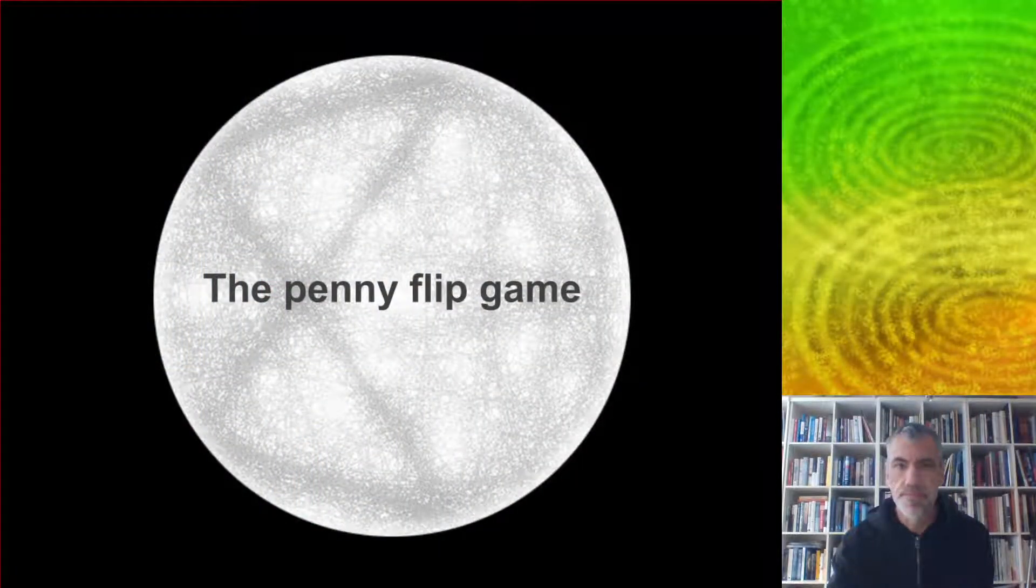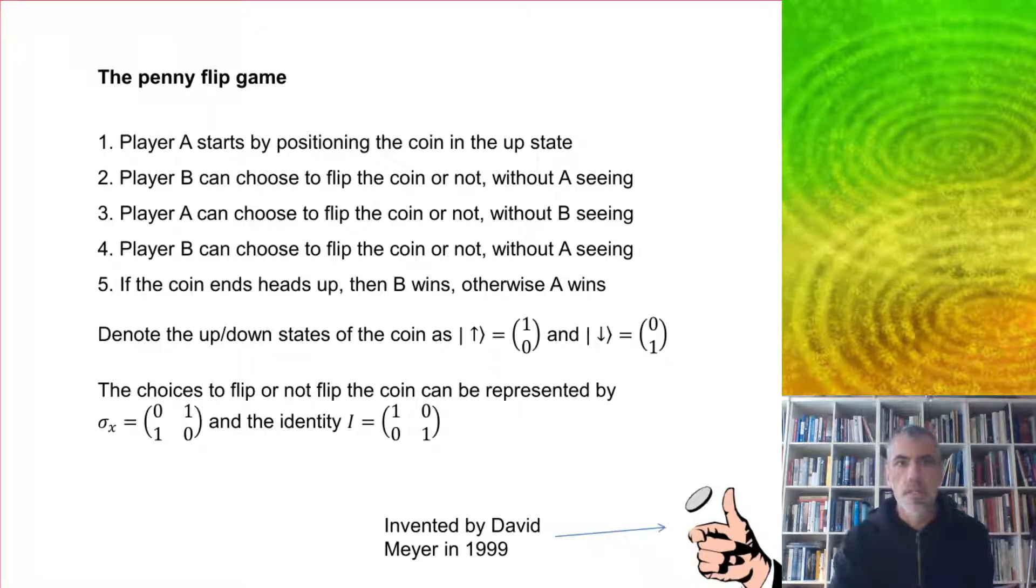Game theory is very important in economics, and it's interesting to ask how games change when they're played using quantum logic instead of classical logic. Quantum game theory seems to have started back in 1999 when quantum computing was still in its infancy, and there were two games that we're going to talk about. One is the prisoner's dilemma, which will be the subject of the next segment, and the first one is the penny flip game.